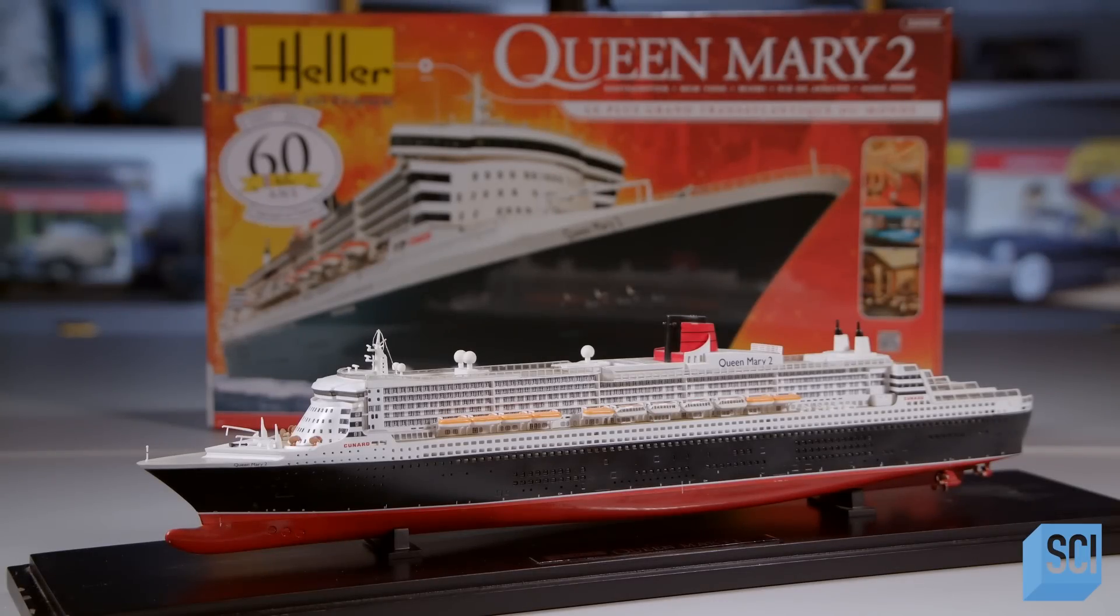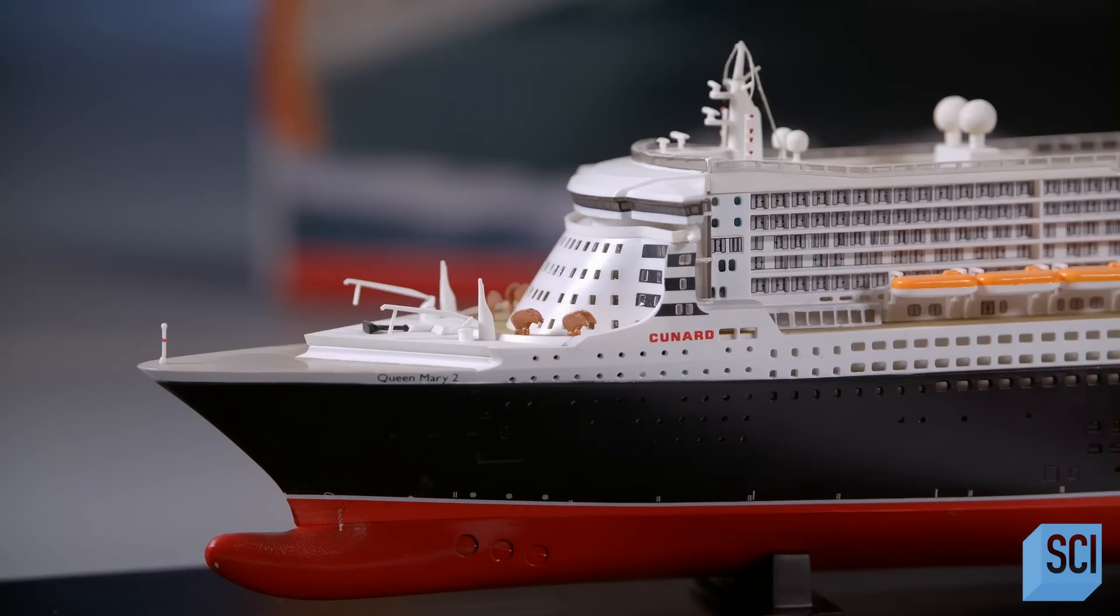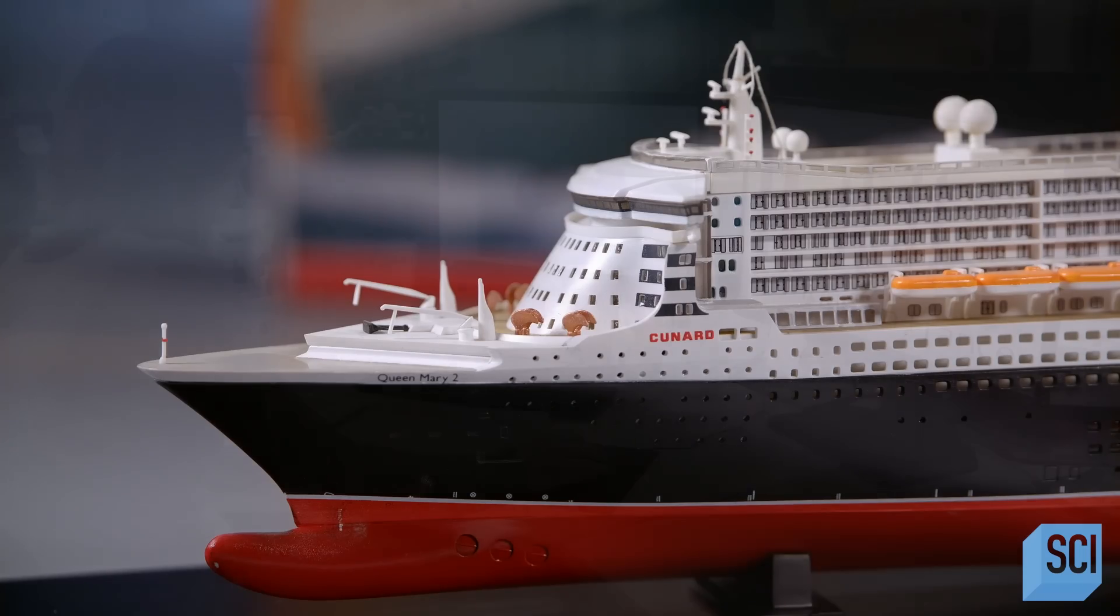With a plastic model kit, a colossal ocean liner can be replicated in small scale. Built with nearly 2,000 pieces, assembly is all about the details.